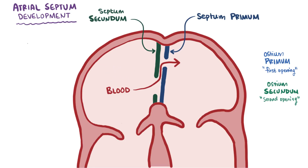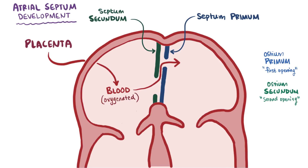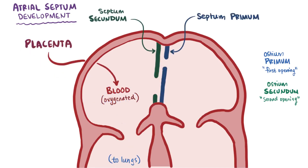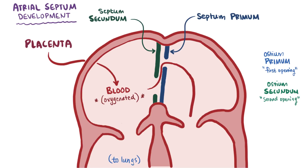The developing newborn gets oxygenated blood from the placenta, which goes from the umbilical vein over to the right atrium. This is different because after development only deoxygenated blood goes to the right atrium, which is then sent to the lungs to pick up some oxygen. In the developing fetus though, it's already oxygenated, so instead of going to the right ventricle and to the lungs and back to the left atrium, it just bypasses the right ventricle and lungs through the foramen ovale and into the left atrium. The oxygenated blood then goes to the left ventricle to be pumped to the body.